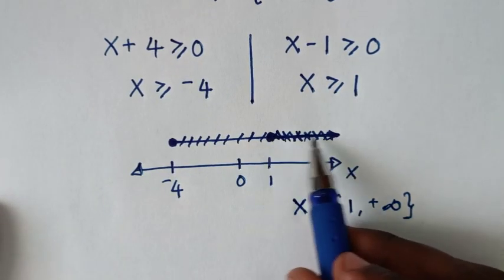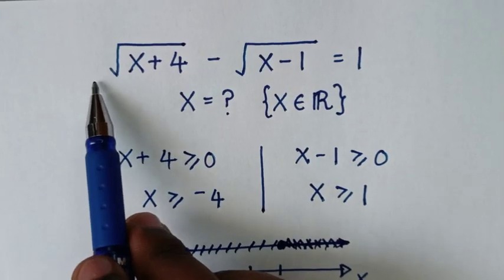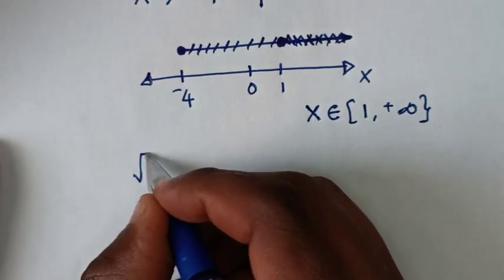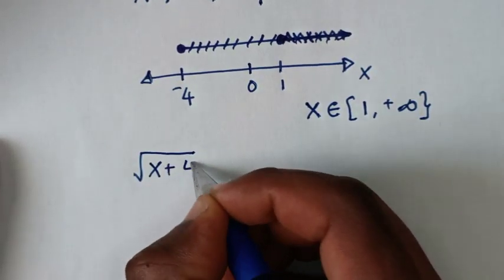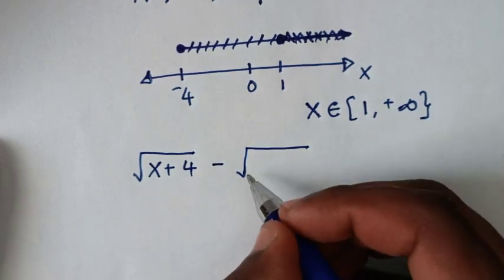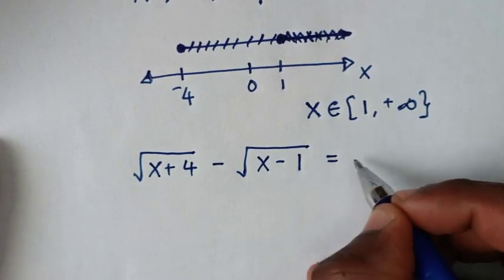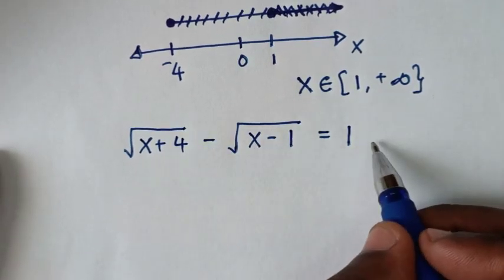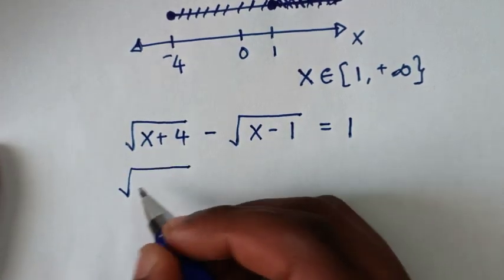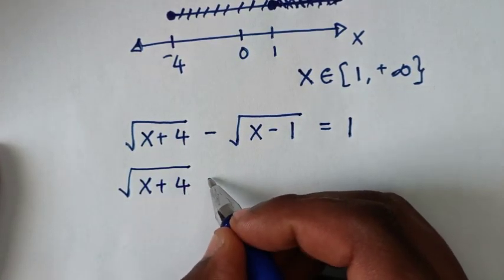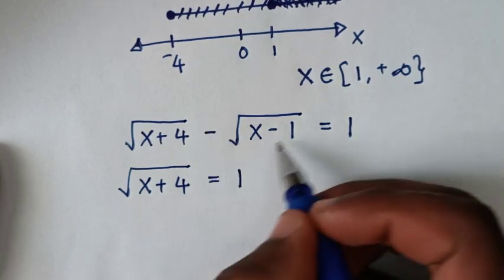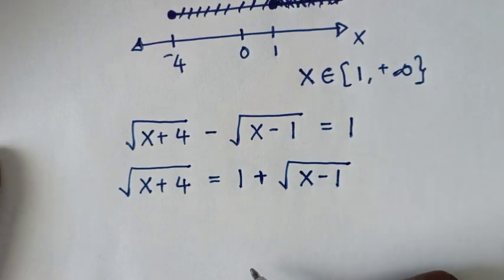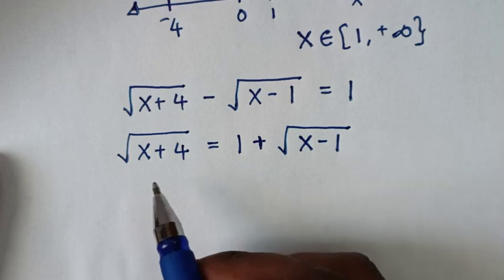Now let's solve this problem to get the exact value of x. From the problem, square root of (x plus 4) minus square root of (x minus 1) is equal to 1. Moving the minus square root of (x minus 1) to the other side gives square root of (x plus 4) equals 1 plus square root of (x minus 1). In the next step, we will square both sides.